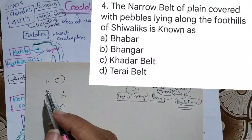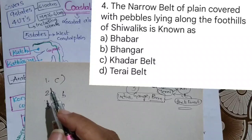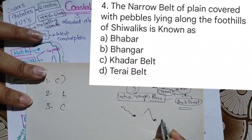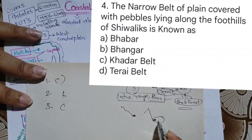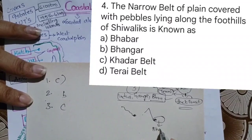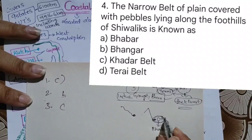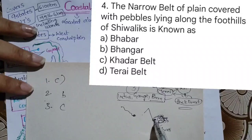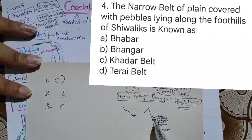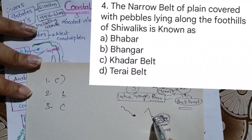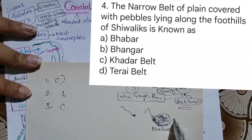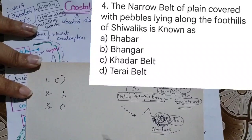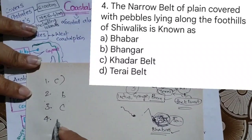Next question: the narrow belt of the plain covered with pebbles lying along the foothills of the Shivaliks is called what? Near the Shivaliks, there are pebbles throughout. The soil is porous here, so rivers disappear in this region and reappear in the Terai region further down. This pebble region is called Bhabar.